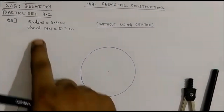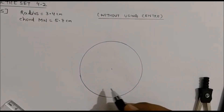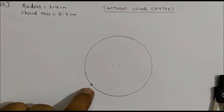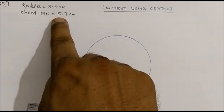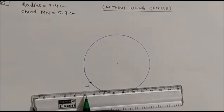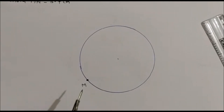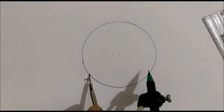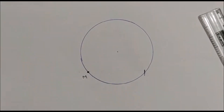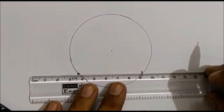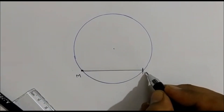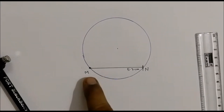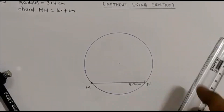Next step: you have to draw chord MN of 5.7 cm. Mark one point here — this is point M. The chord is MN, so mark point M. Now take a distance of 5.7 cm from the scale. Keep the compass on point M — this distance is 5.7 cm — and cut an arc. Join this. So this is point M, and this distance is 5.7 cm. Now we have to draw tangents at M and N, but without using the center.